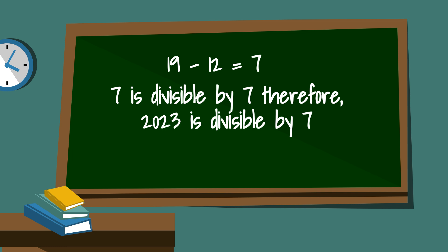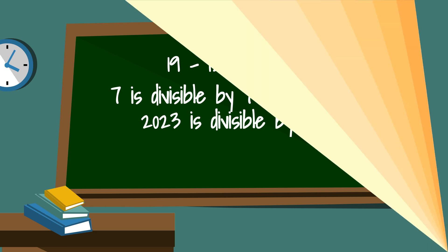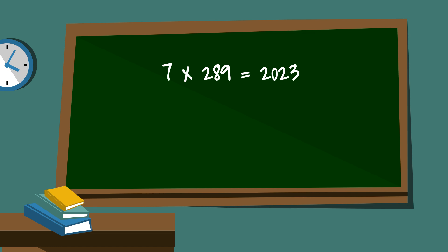Yes 7 is divisible by 7. So I know that 2023 is also divisible by 7. In fact 7 times 289 is 2023.